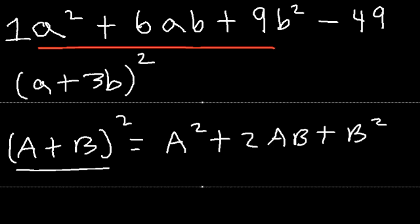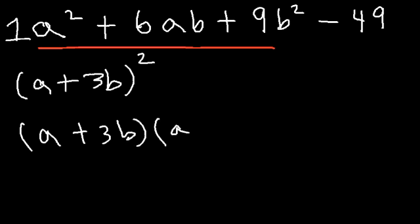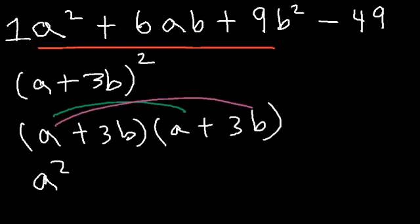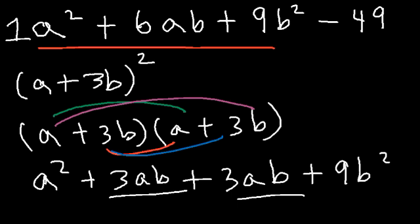If you feel unsure about this, you can FOIL the expression. Multiply (a + 3b) times (a + 3b): a times a is a squared, a times 3b is 3ab, 3b times a is also 3ab, and 3b times 3b is 9b squared. Since 3ab plus 3ab is 6ab, this gives us back the original expression.